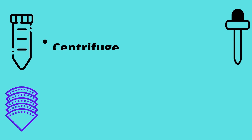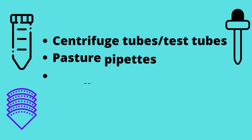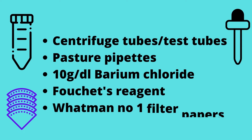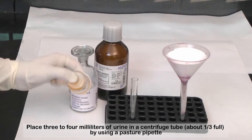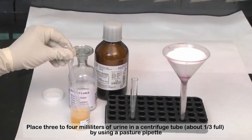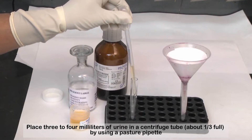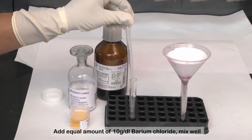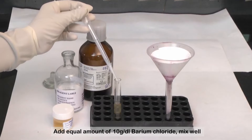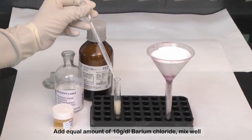Materials: Centrifuge tubes, Pasteur pipettes, barium chloride, Fouché's reagent, and Whatman No. 1 Filter Papers. Method: Place 3–4 milliliters of urine in a centrifuge tube, then add an equal amount of barium chloride using a Pasteur pipette, and mix well.